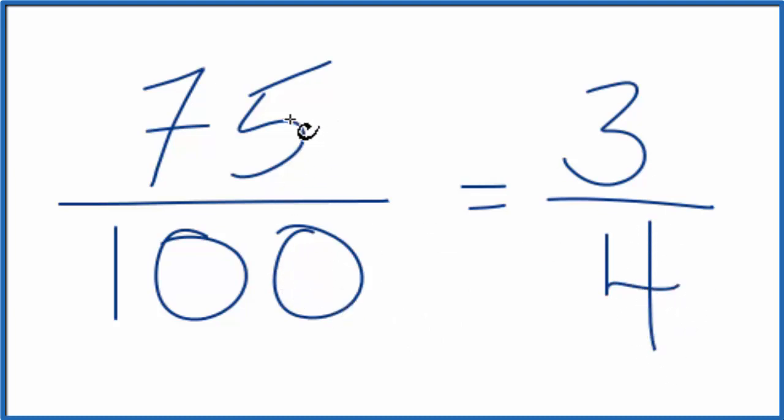So the fraction 75 over 100, that's equivalent to 3/4. They have the same value, even though they're written with different numerators and denominators.